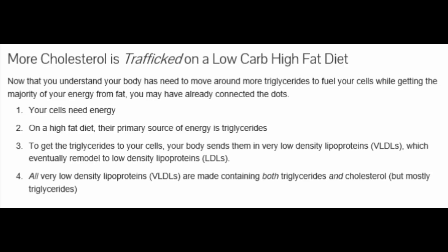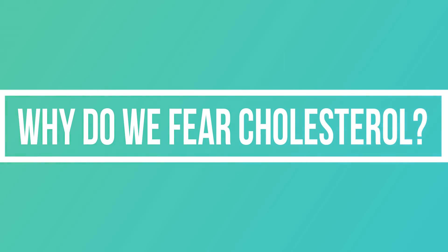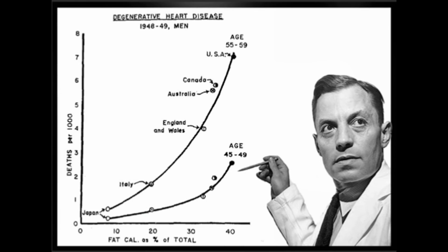This slide also from Dave Feldman's website reiterates that demand for triglycerides is greatly increased on a high-fat diet. Your cells need energy; on a high-fat diet the primary source is triglycerides. To get triglycerides into cells, the liver produces VLDLs, which remodel into LDLs within 30 minutes to one hour after offloading their energy into the cell. These VLDLs contain both triglycerides and cholesterol, but mostly triglycerides.